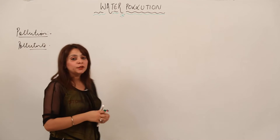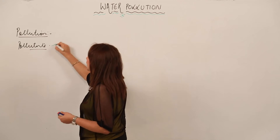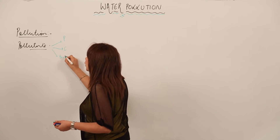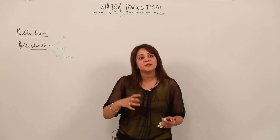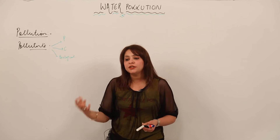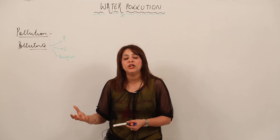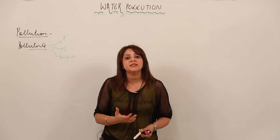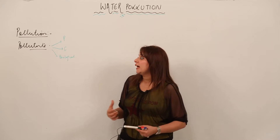The question comes: what is the basic nature of pollutants? These pollutants can be physical in nature, they can be chemical in nature, and even they can be biological. The substances that lead to pollution can be a physical thing, a chemical substance like SO2 gas, CO2 gas, heavy metals, or even microorganisms, making them biological in nature.